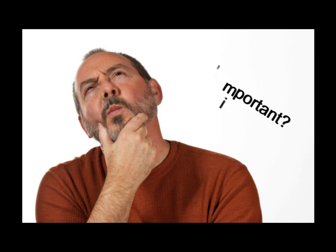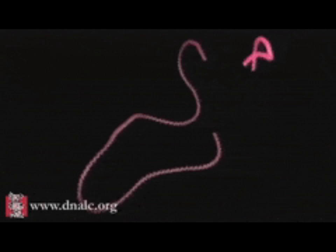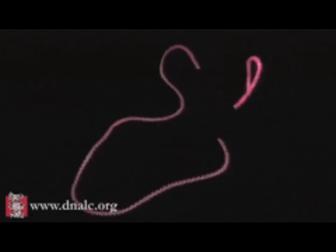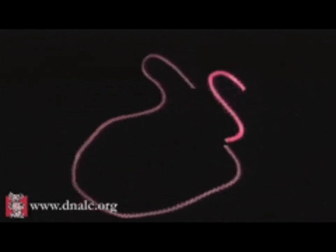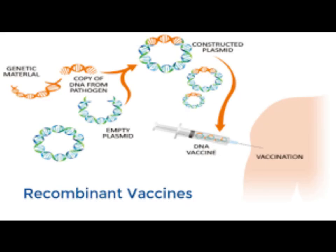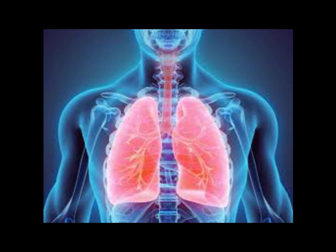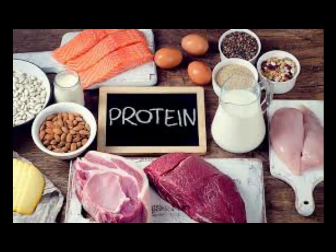Why is recombinant DNA important? Recombinant DNA has been gaining in importance over the last few years, and will only become more important in the 21st century as genetic diseases become more prevalent and agricultural area is reduced. Some of the areas where recombinant DNA will have an impact include: better crops, recombinant vaccines, prevention and cure of sickle cell anemia, prevention and cure of cystic fibrosis, production of clotting factors, and production of insulin.